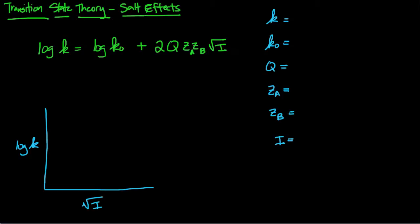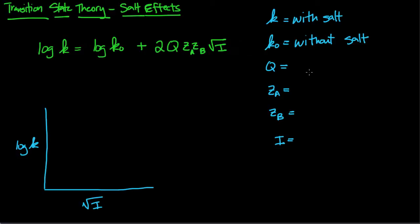Part two of transition state theory and salt effects — we're going to look at the salt effect using a mathematical approach. We have an equation: log k equals log k-naught plus two times q times za times zb times the square root of I. k is our rate constant with salt present in solution, k-naught is the rate constant without salt present. q is a constant with a value of 0.509 when temperature equals 25 degrees Celsius. za is A's charge and zb is B's charge.